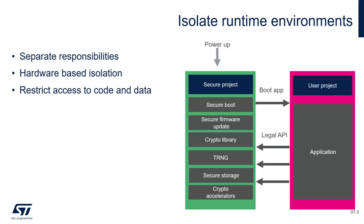The purpose of creating an isolation barrier between the secure and user project is to protect key secrets and assets. If a hacker gains access to the user application, they can cause mischief in those regions, but they will not be able to access any resource behind the isolation barrier — they cannot compromise keys or bypass authentication checks. To achieve this level of isolation, hardware-level support is required; it cannot be done purely in software.